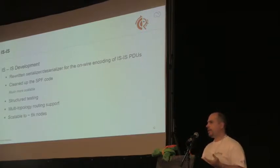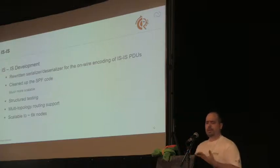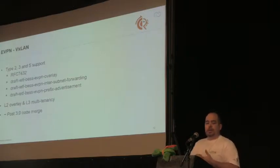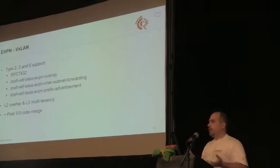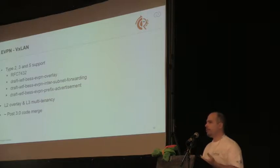The developer tested it up to 6,000 nodes in the network, but is running into some issues there that they are still looking into. So if you have 6k nodes you could still run this. Multi-topology routing support was added as well, which seems to be one of the things you'd want when deploying IS-IS.